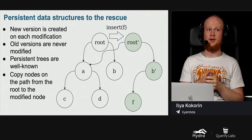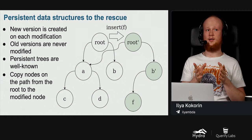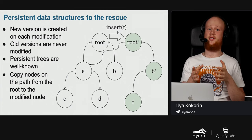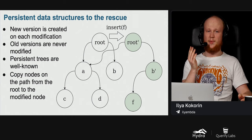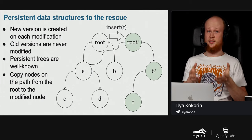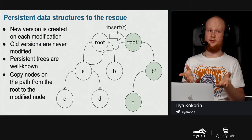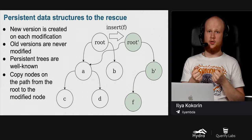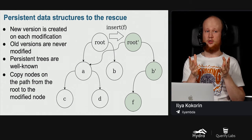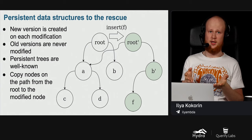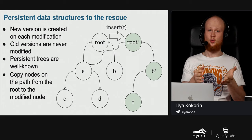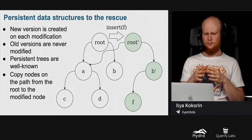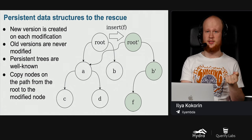Persistent data structures can help us. A data structure is called persistent if modification operations do not modify the data structure itself — instead, they create a new version. Consider a binary search tree: when we insert key F, instead of modifying the existing tree, we create a new version with F inserted. The new version shares some nodes with the existing version — nodes A, C, and D are shared. We copy only nodes on the path from the root to the modified node, which is a logarithmic number of nodes.